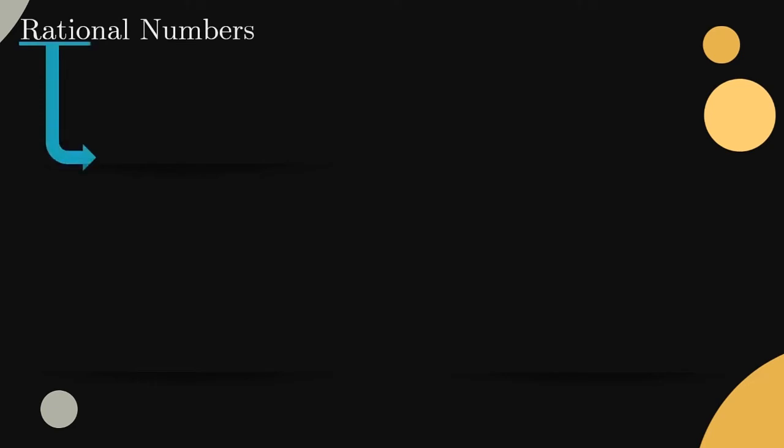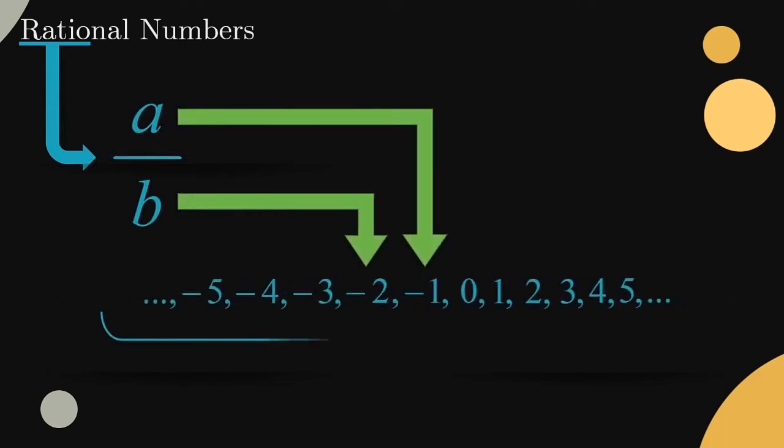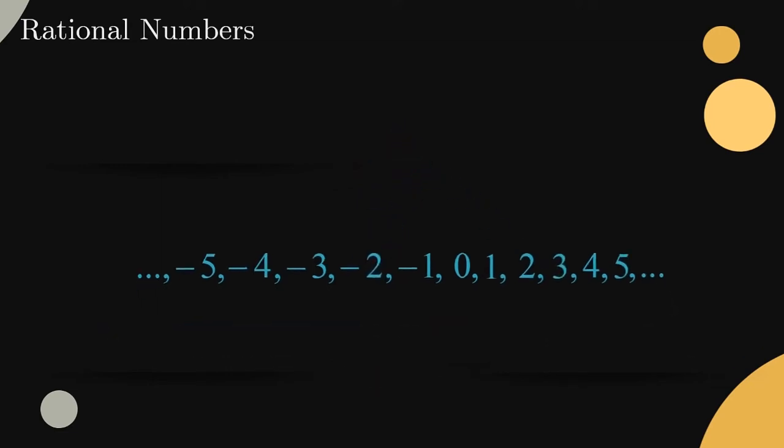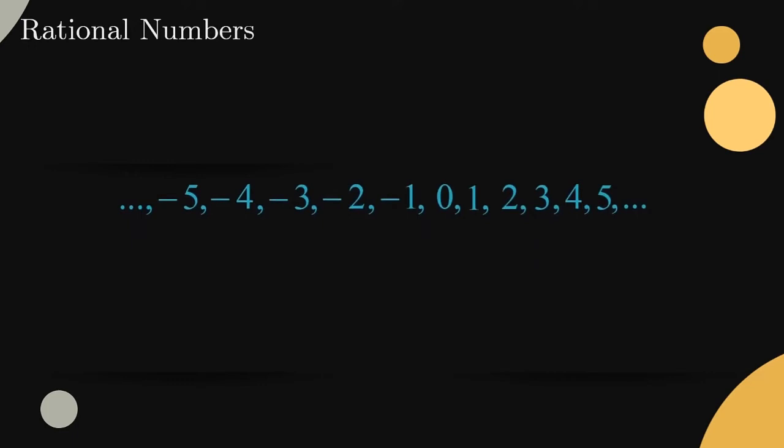In order for a number to be considered rational, it only has to meet one simple requirement: we have to be able to write it as a fraction where both the numerator and denominator are integers. The most obvious rational numbers are already written in this form, and the integers themselves are rational numbers as they can easily be written as fractions with a denominator of 1.